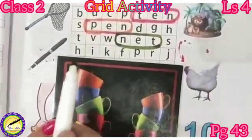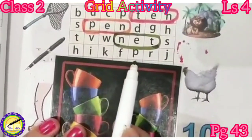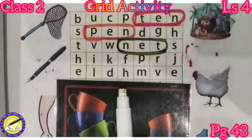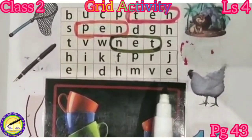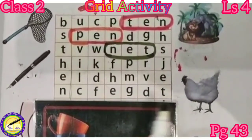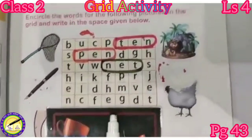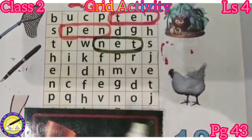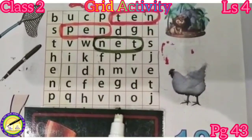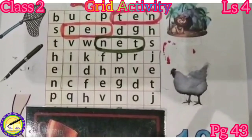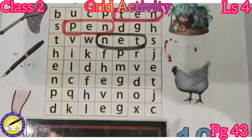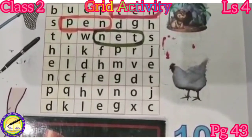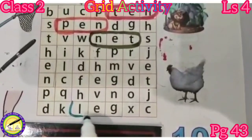Come on to the next line: H, I, K, F, P, R, J. No meaningful word. Move on: E, L, D, H, M, V, E. There is no meaningful word. Next line: N, C, F, E, G, D, T — again no meaningful word. Next line: P, Q, H, V, N, O, J — no meaningful word. Last line: D, K, L, E, G. Yes — L, E, G, leg. This is a meaningful word. Encircle it.